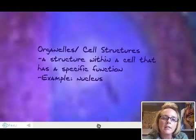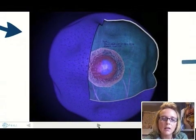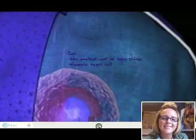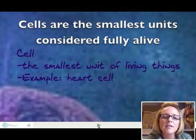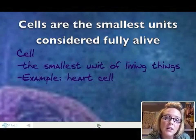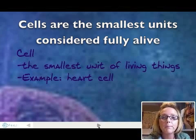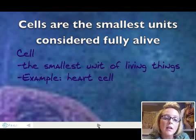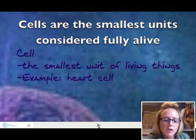From organelles, we head on to the cell. The cell, as you'll recall, is the smallest unit of living things. A great example would be a heart cell in the human body. You also have skin cells, nerve cells — all kinds of cells that perform a specific function in your body.